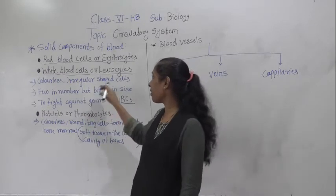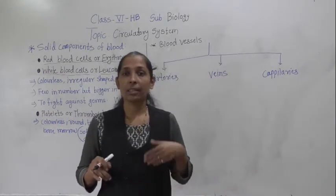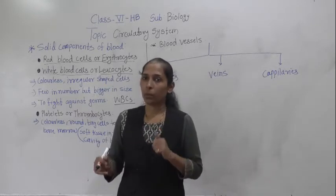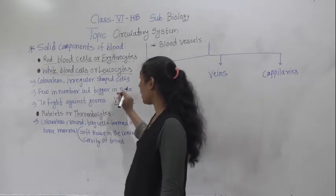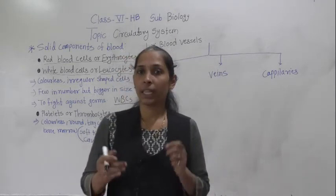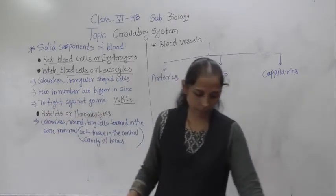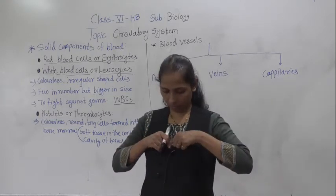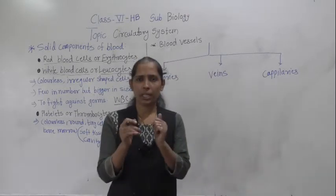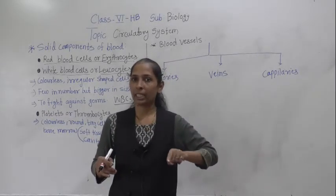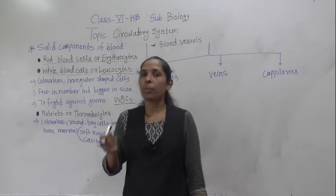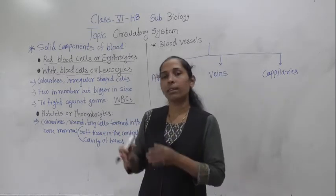White blood cells are colorless and irregular in shape, meaning they don't have any particular color or proper shape. Compared to red blood cells, WBCs are fewer in number but bigger in size.